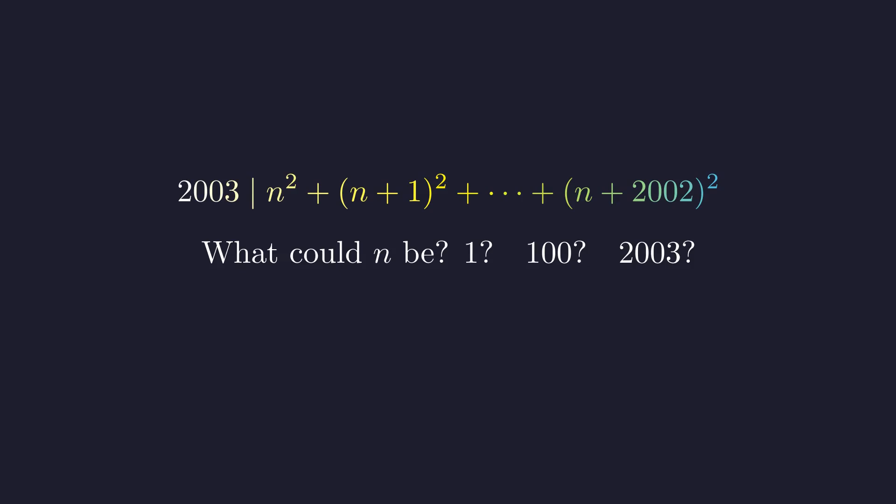What value of n might work here? Our first instinct might be to try specific values or look for a pattern related to 2003 itself. But let's approach this more systematically.